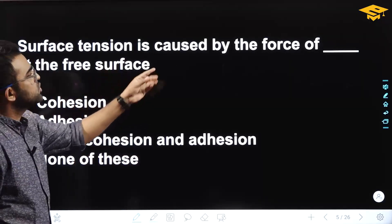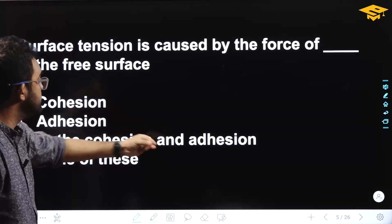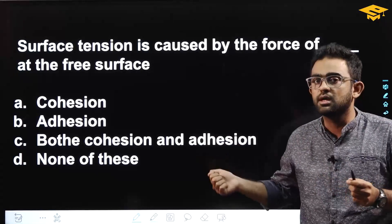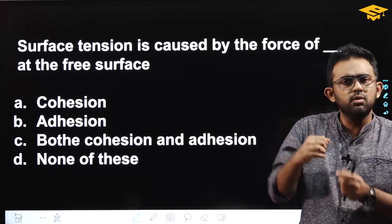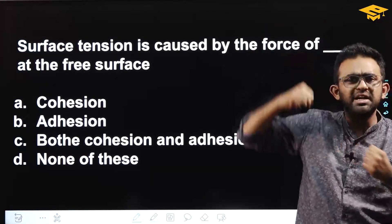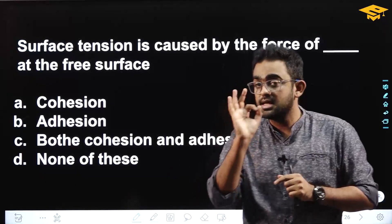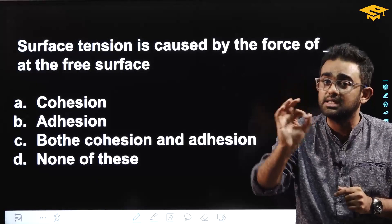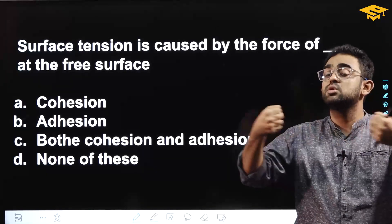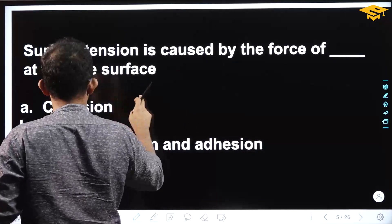Surface tension is caused by the force of dash at the free surface — options are: cohesion, adhesion, both, or none. At the free surface, the fluid molecules interact with the same molecules, which is cohesion. Surface tension is due to unbalanced net downward cohesive force at the surface.